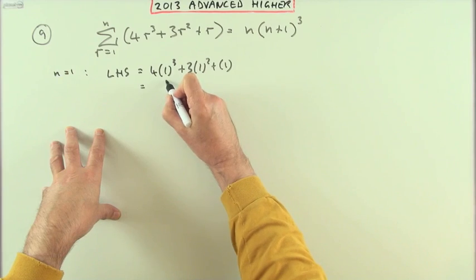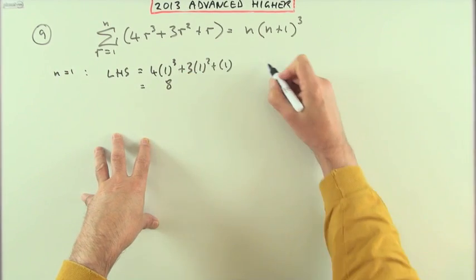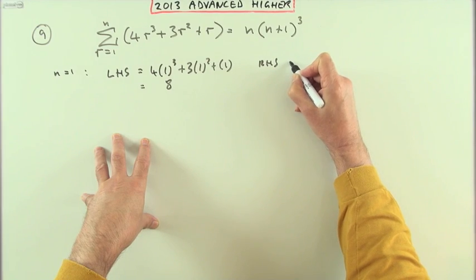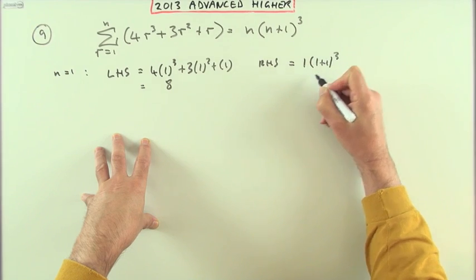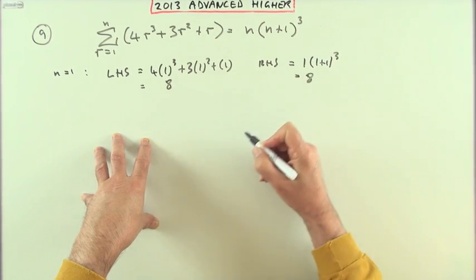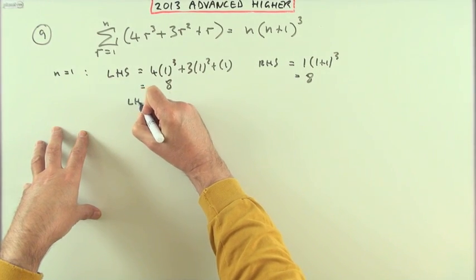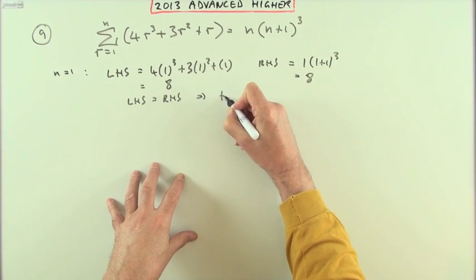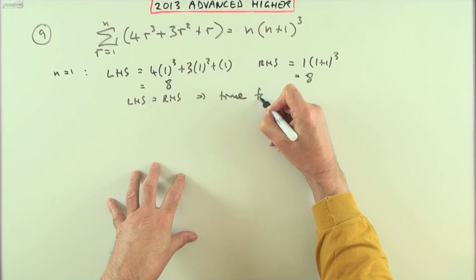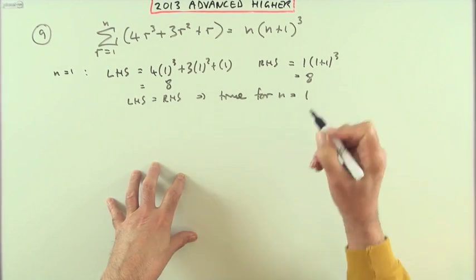The right-hand side when n is 1 will be 1 times (1 plus 1) cubed, that's 2 cubed, which is 8. So the first part is the left-hand side equals the right-hand side, which means the statement is true for n equals 1.